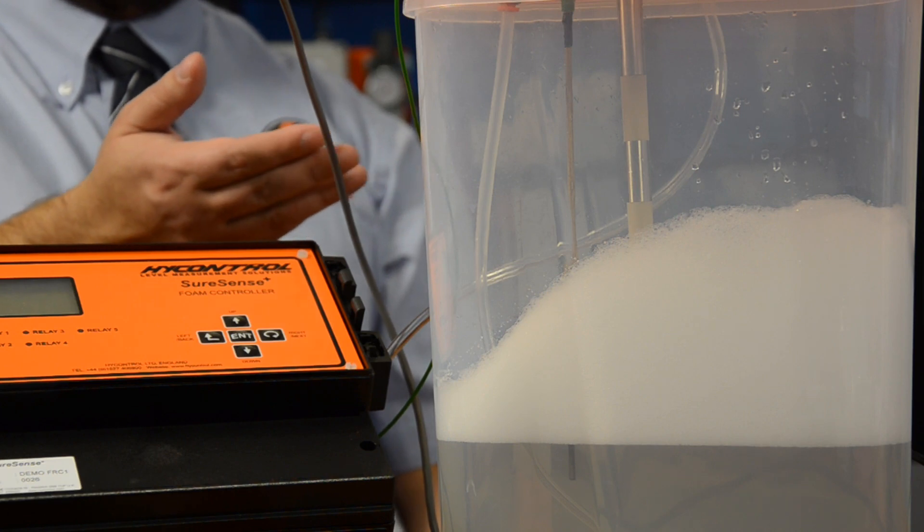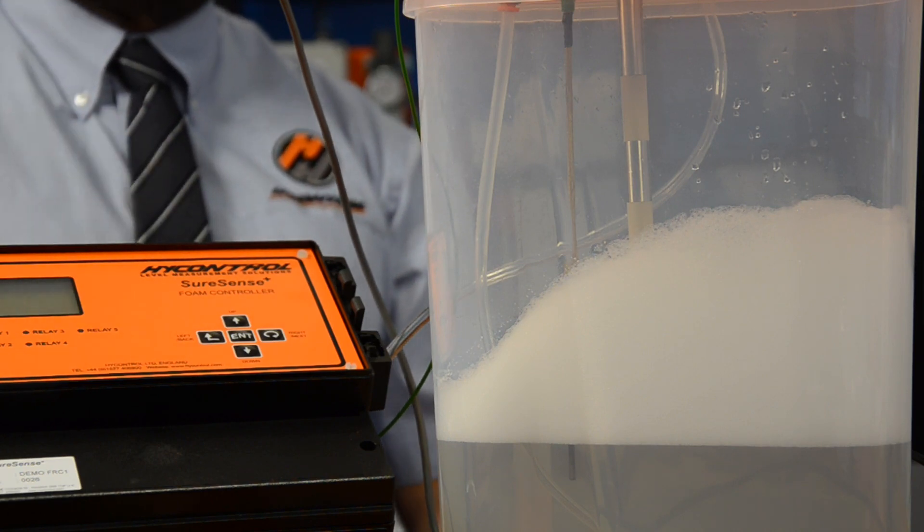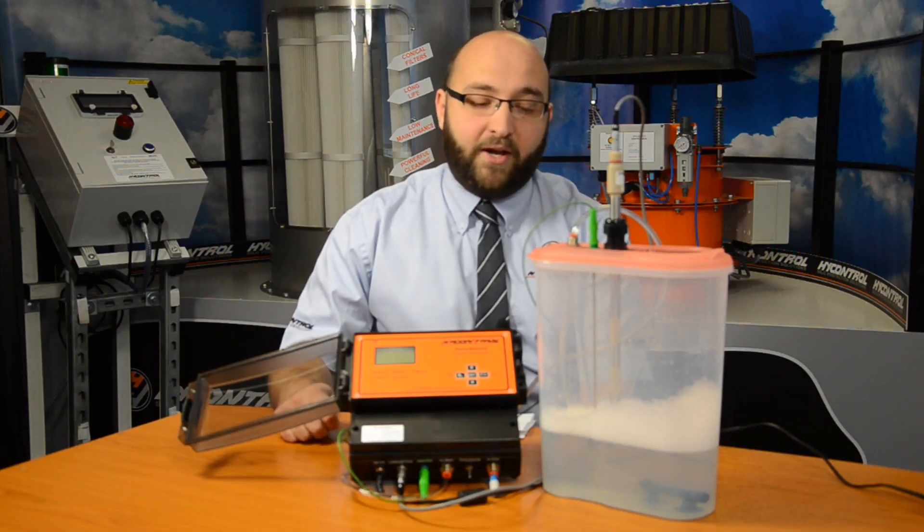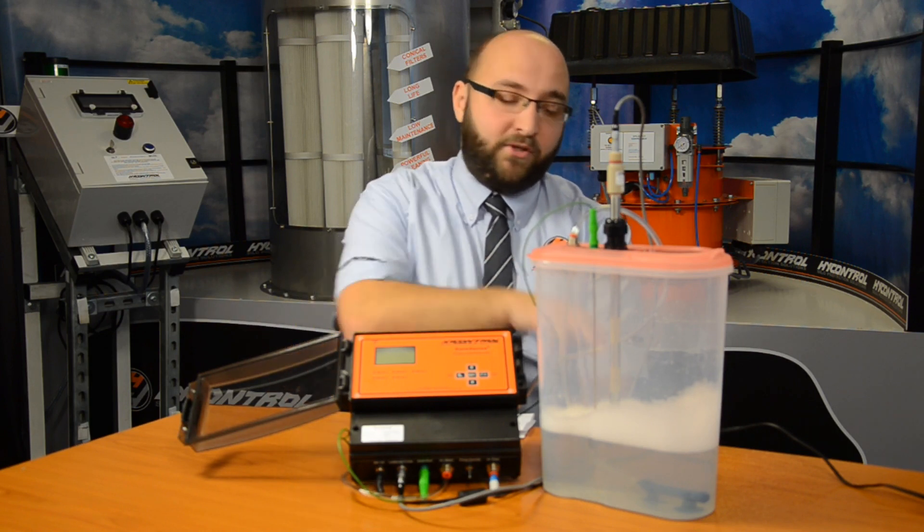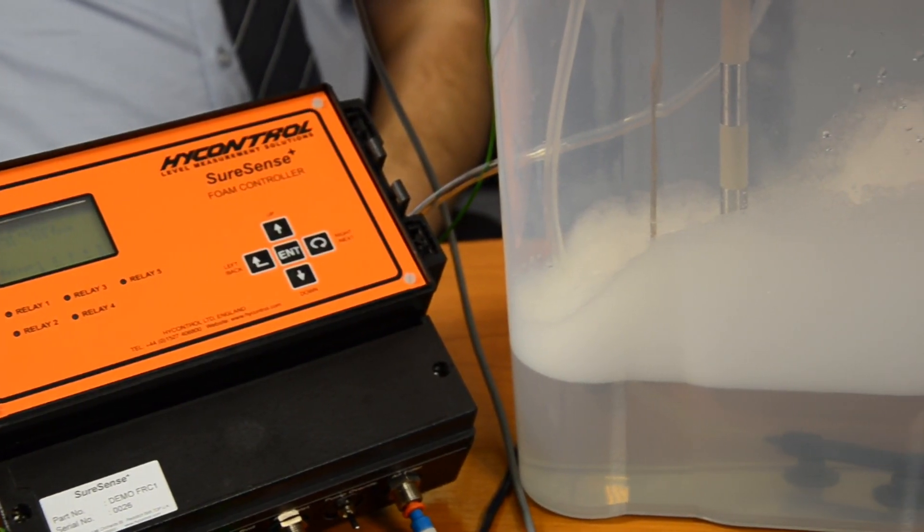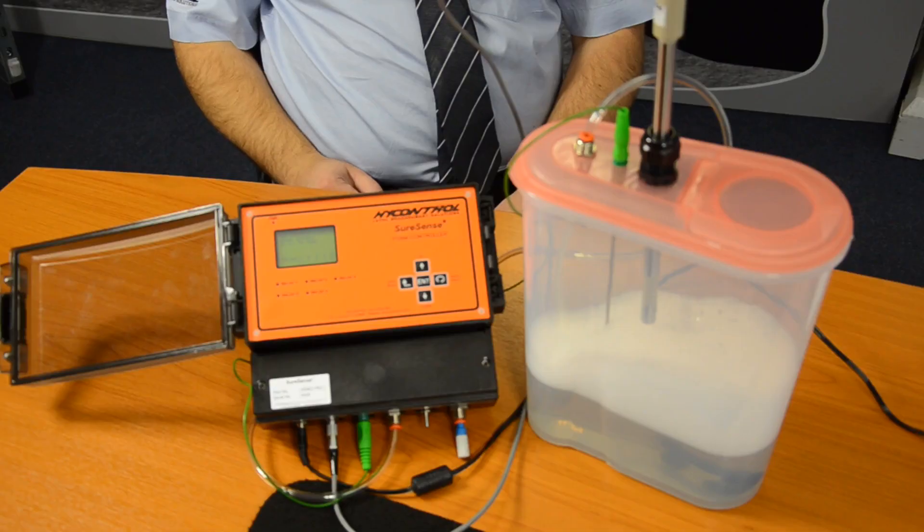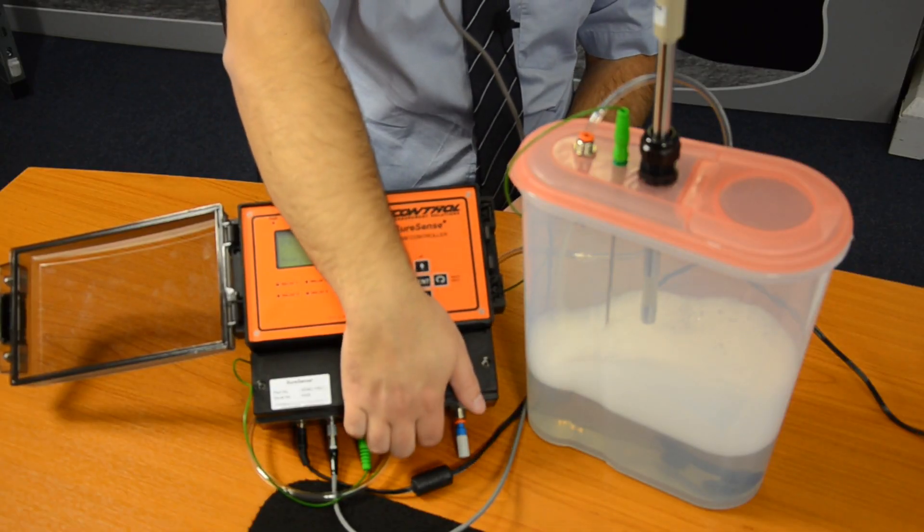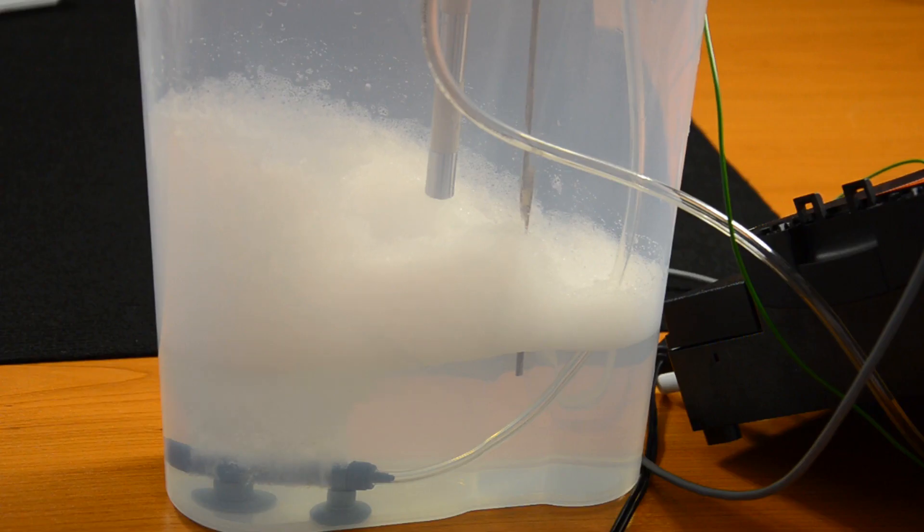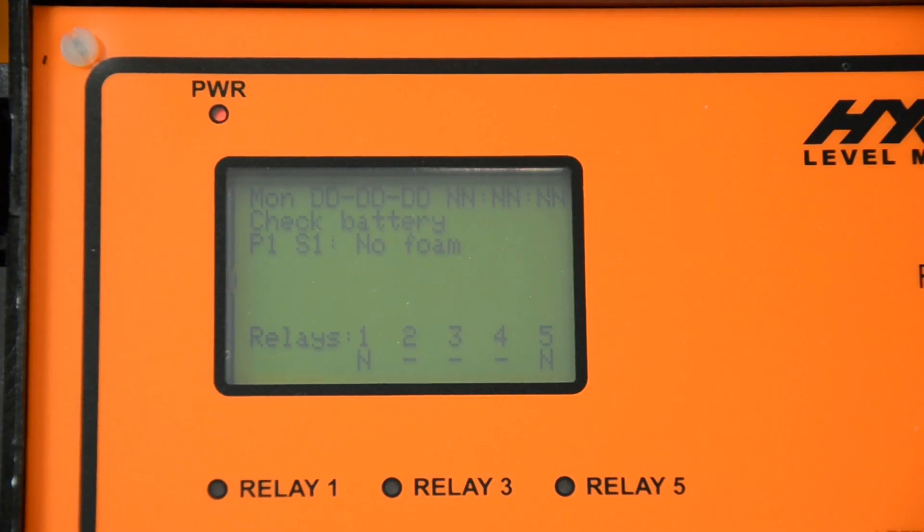So this is our foam demo kit and we've wired it up today to work in reverse to how you'd see it in an application. Whenever the foam isn't present we'll turn on the pump below. This will create a foam column and then trip the relay and stop the pump. As you can see the SureSense Plus can detect foam straight away, even the really light foam.